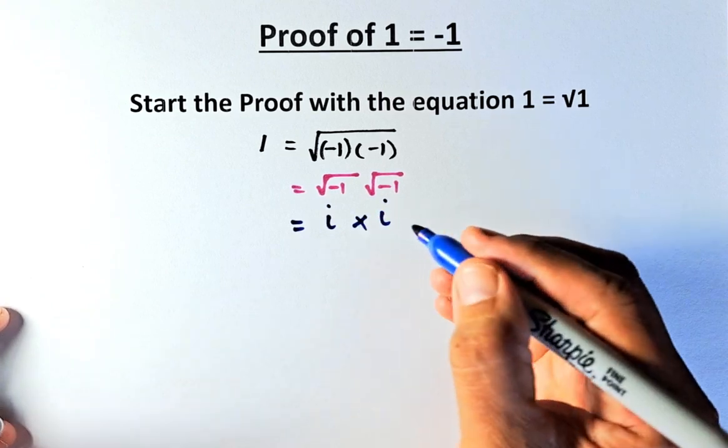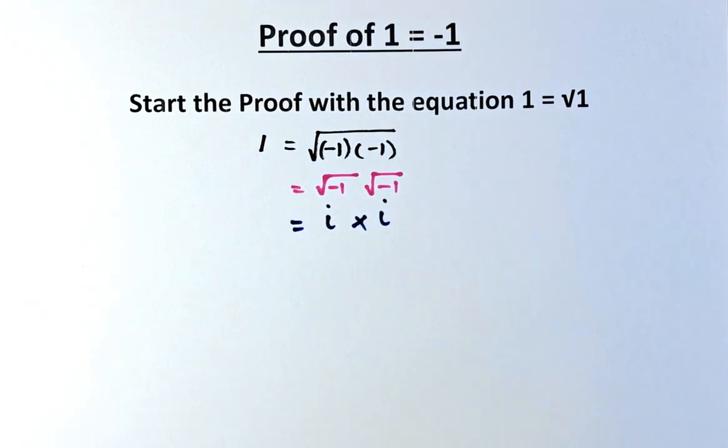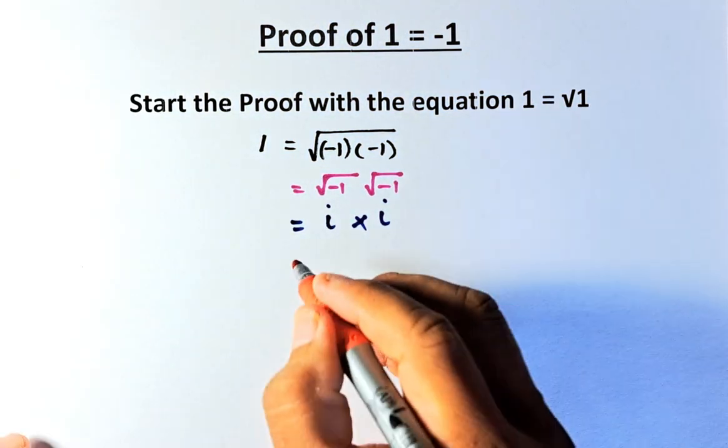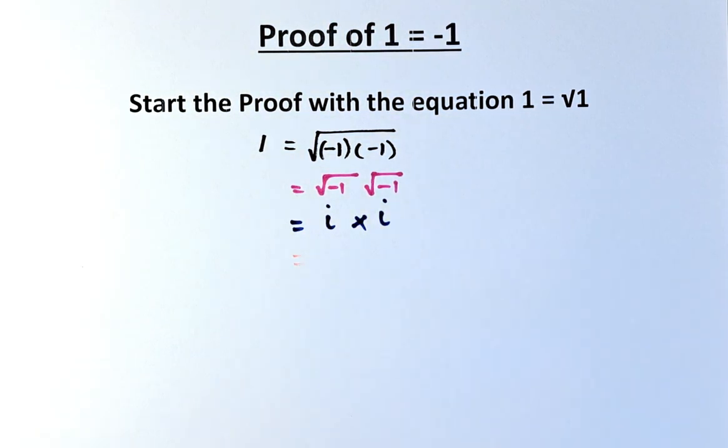So when you multiply i by i, what you will get is i multiplied by i is going to be i squared. So we are on the way there.